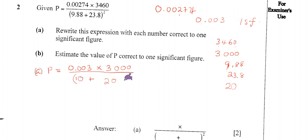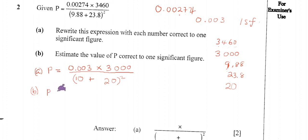The whole bottom expression is raised to the power of two. That completes part A — rewriting the expression with each number correct to one significant figure. Part B says estimate the value of P correct to one significant figure, so we evaluate the expression. P equals zero point zero zero three multiplied by 3000, all over (10 plus 20) squared.